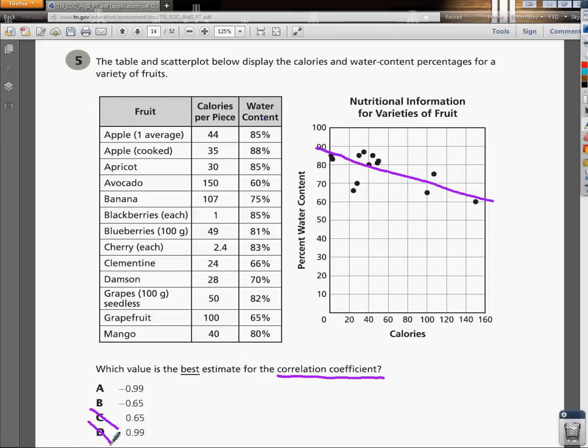Well, as we can see from our data, it is not setting on that line perfectly, which means we can eliminate the one that has an absolute value of close to 1, which by elimination leaves us with a negative 0.65. So I hope this helps a little bit, and good luck on your EOC.